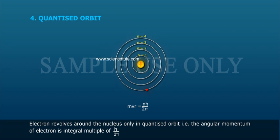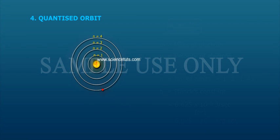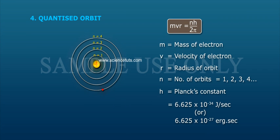mvr = nh/2π, where m = mass of electron, v = velocity of electron, r = radius of orbit, n = number of orbit (1, 2, 3, 4, etc.), and h = Planck's constant = 6.625 × 10⁻³⁴ joules per second.